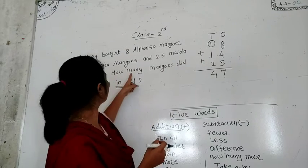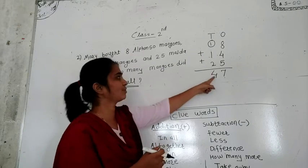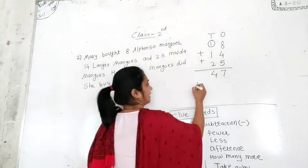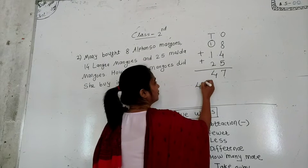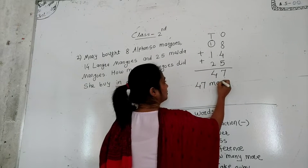47 — how many mangoes? That means 47 mangoes. So I write here 47 mangoes.